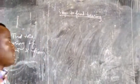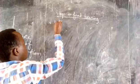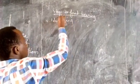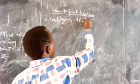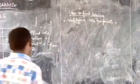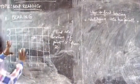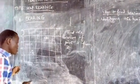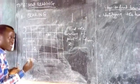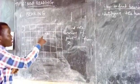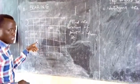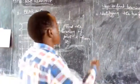Step number one: identifying the two points. You will see where point Z is and where point X is. For example, we find that point Z is here and point X is here.